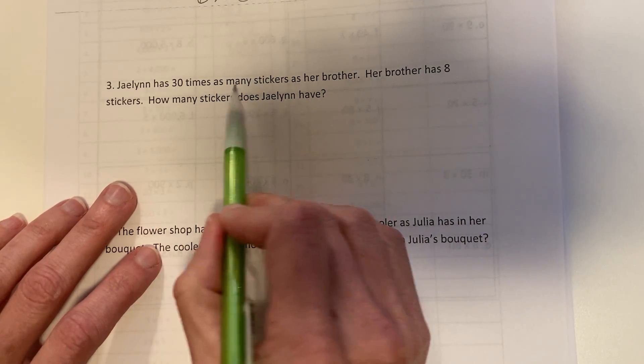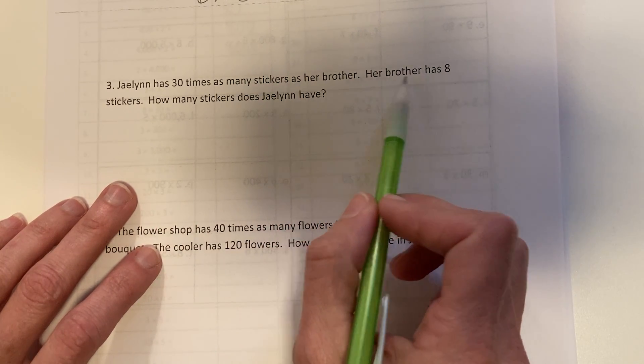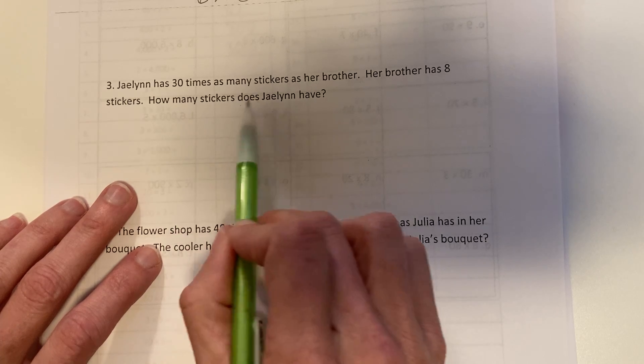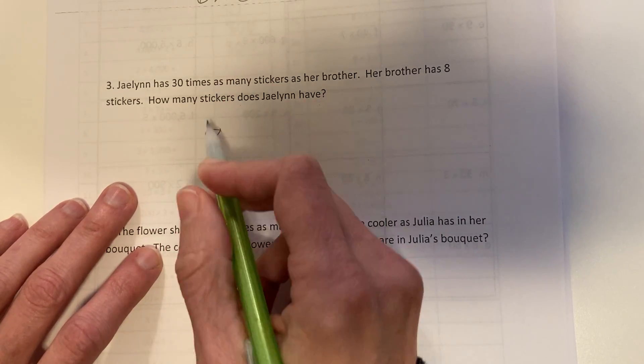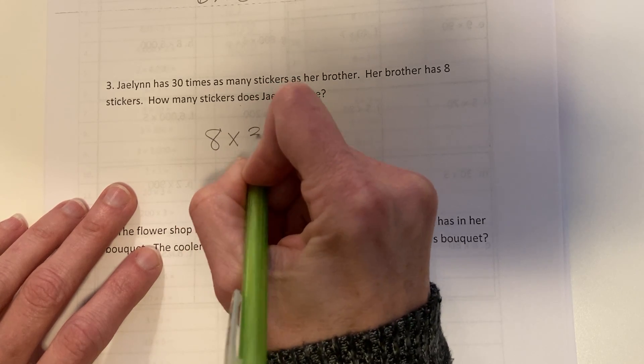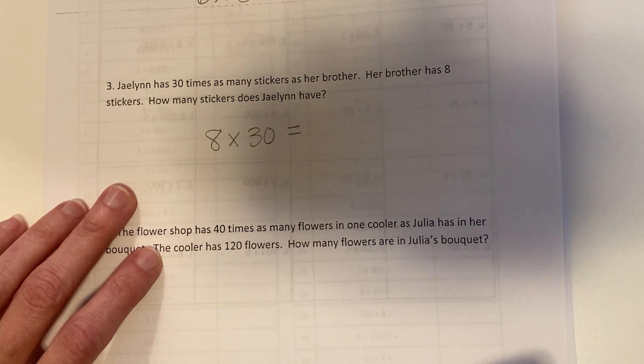Jalen has 30 times as many stickers as her brother. Her brother has 8 stickers. How many stickers does Jalen have? Her brother has 8 and she has 30 times as much as him, so how much does she have?